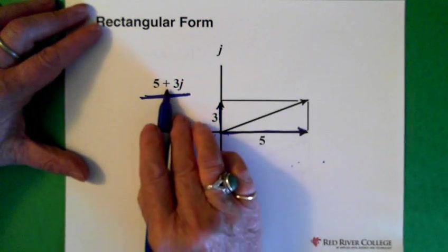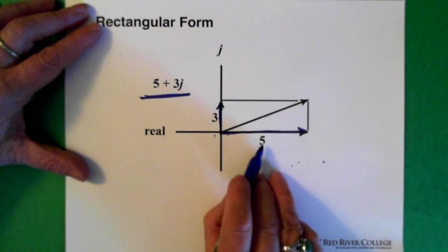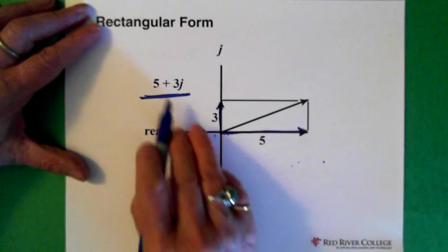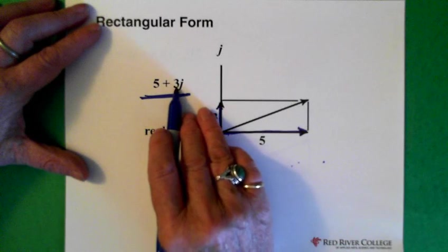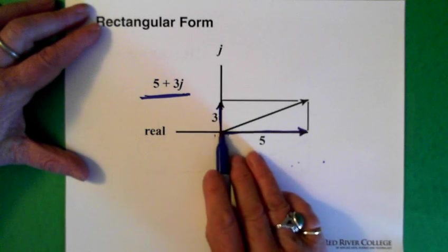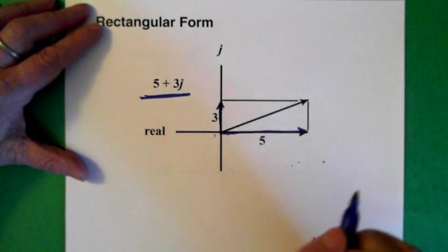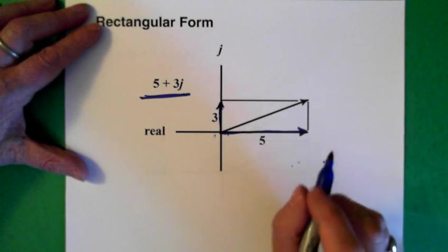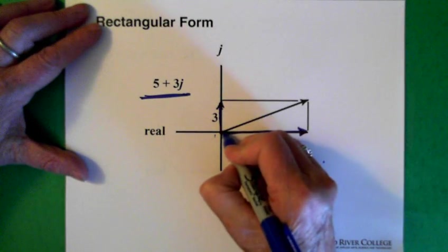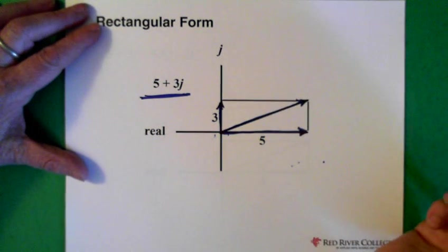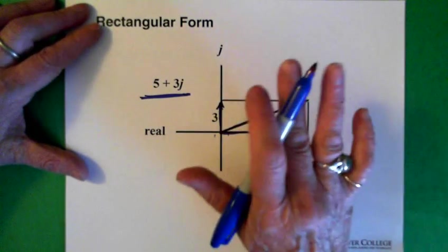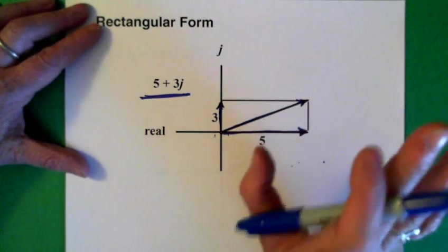The 3 times j is on the imaginary axis. And because it's a plus 5, the plus 5 goes here. If it was a minus 5, we'd be going in this direction. And because it's a plus 3j, it's going up on the imaginary axis. And if we wanted to, we could solve for this component.